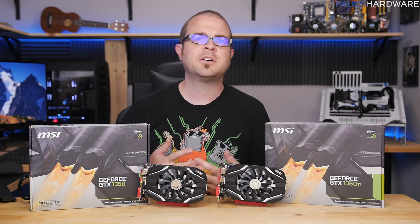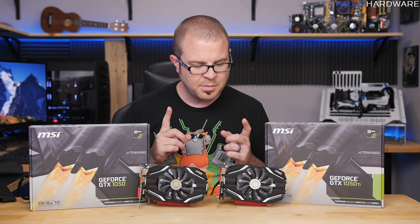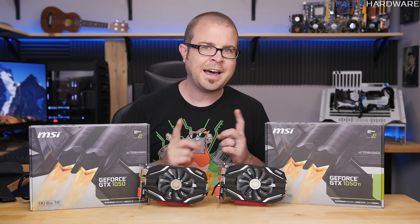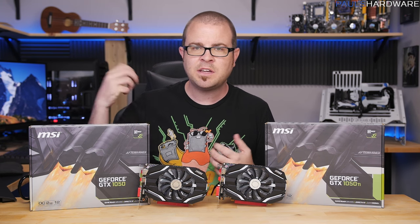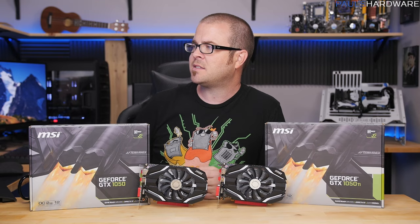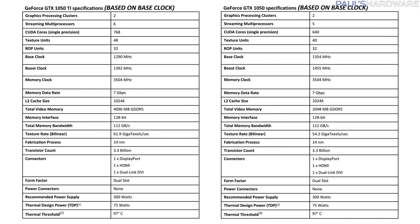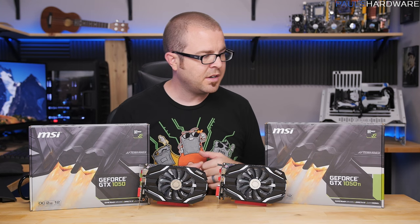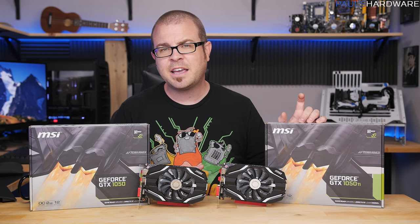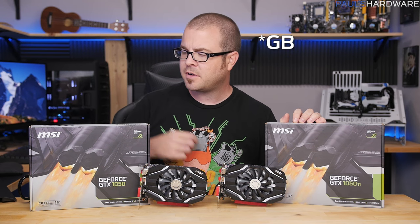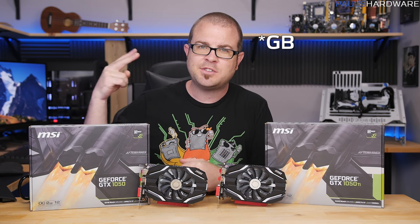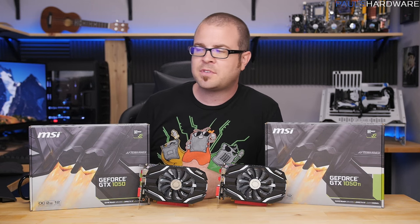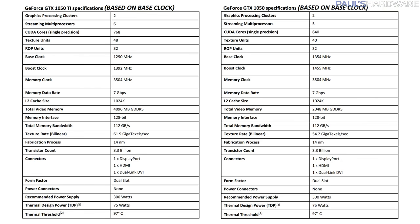Manufacturers will often ship cards in this range at higher frequencies than Nvidia's base and boost clocks. Memory clock is 3504 megahertz, giving you 7 gigabits per second of total memory data rate. The biggest difference between the two cards is that the 1050 Ti has a 4GB frame buffer while the 1050 has just a 2GB frame buffer, though both operate on a 128-bit memory interface.